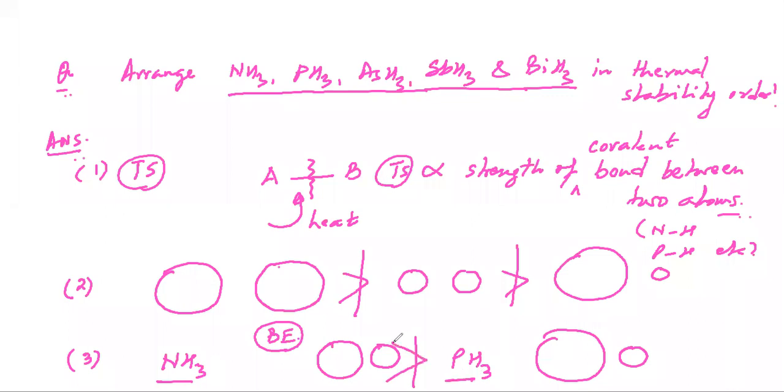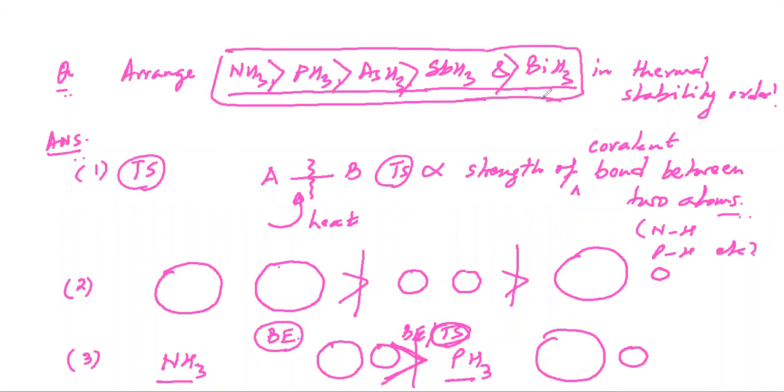Ammonia. Ammonia's bond energy will be more, and if the bond energy is more then thermal stability is more. So ammonia has more thermal stability than phosphine. So the thermal stability order is: ammonia has highest thermal stability, then phosphine, arsine, stibine, and then bismuthine. This is the order.